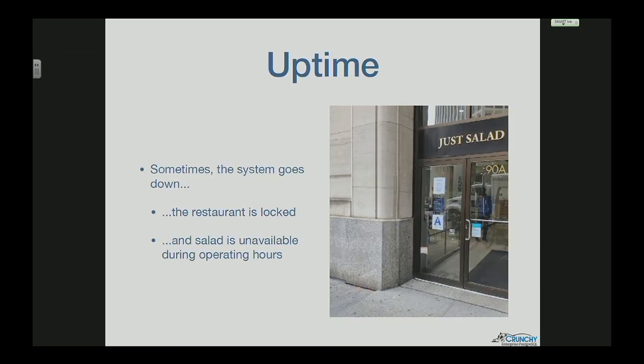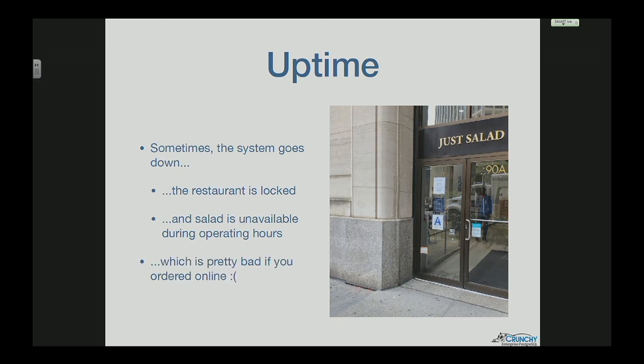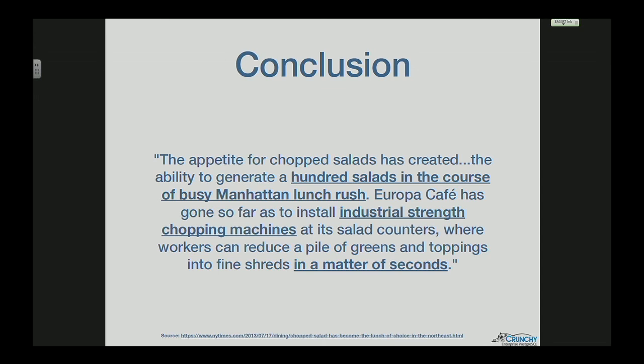But sometimes the system goes down and the restaurant's locked and you can't get your salad during operating hours. Maybe you ordered it online and can't get it — which actually happened to me. I was basically standing outside with the door locked, I could see everything inside including my salad. The conclusion: the salad industry in New York listened to the market. There was high demand, and as people kept ordering more salad, they not only improved the process but automated it further — getting it down from a long process to very quick, making sure all New Yorkers are happy with their lunch. Thank you.